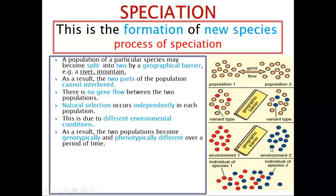After so many generations, you will find that they become genetically — in terms of genes — and phenotypically — the way you see them — different. They were the same color originally, but they become different over many generations. Because the genes have changed, automatically the phenotype must also change.